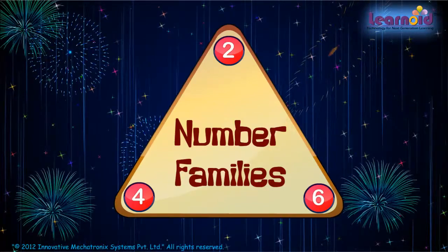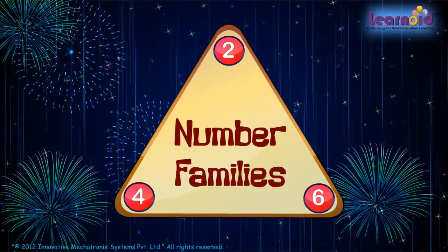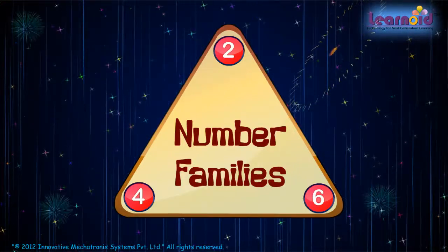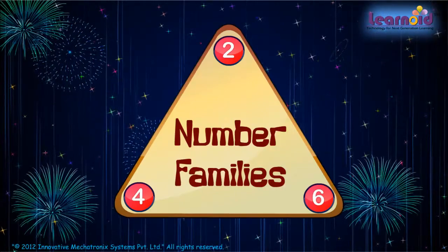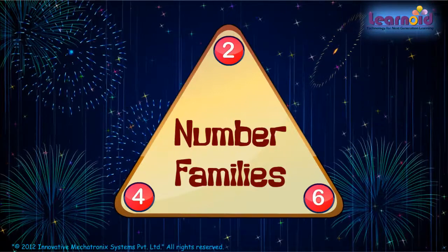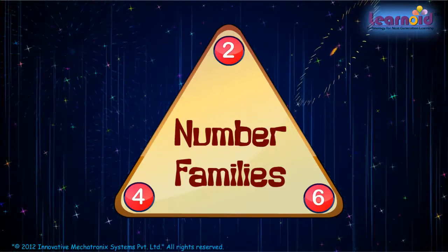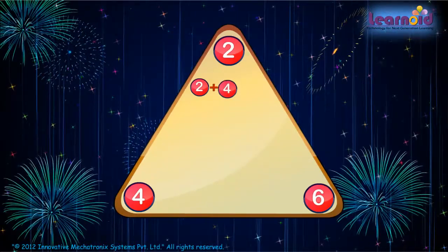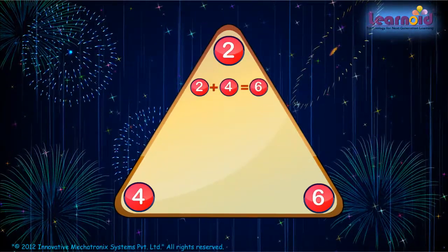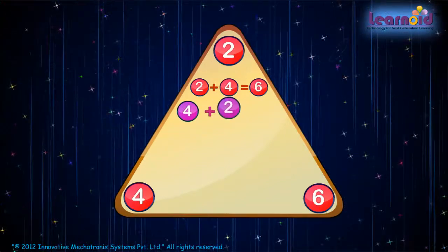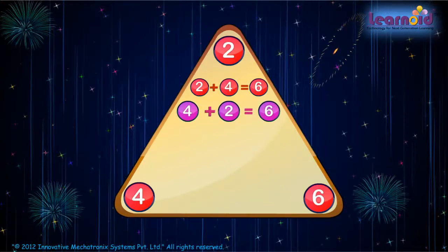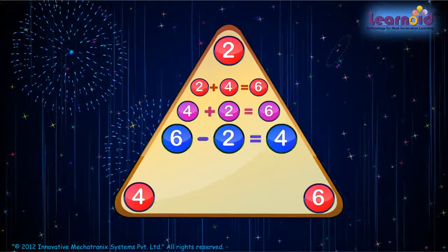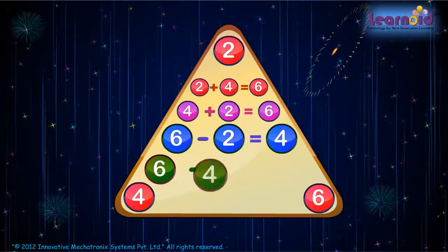Example: 2, 4 and 6. The sums given below use the same numbers, so these numbers belong to the same number family. 2 plus 4 is 6. 4 plus 2 is 6. 6 minus 2 is 4. 6 minus 4 is 2.